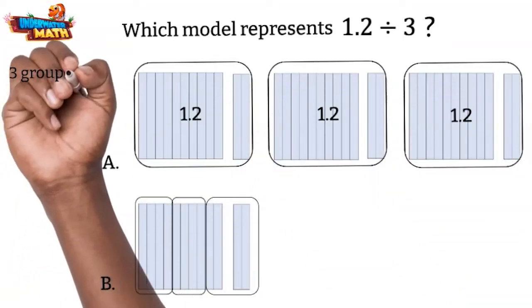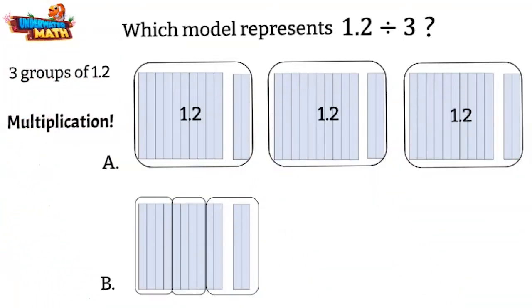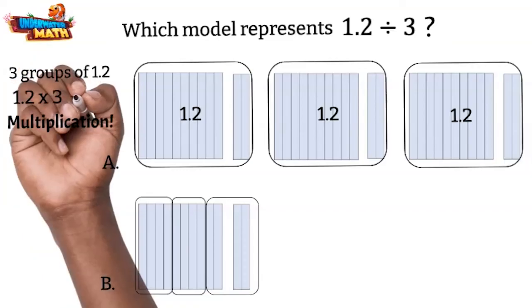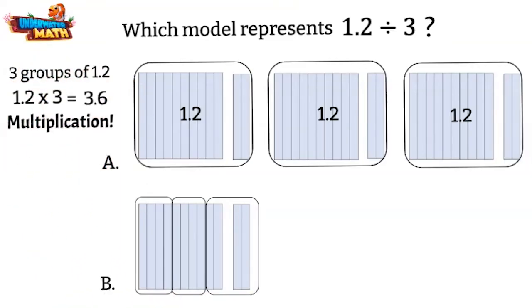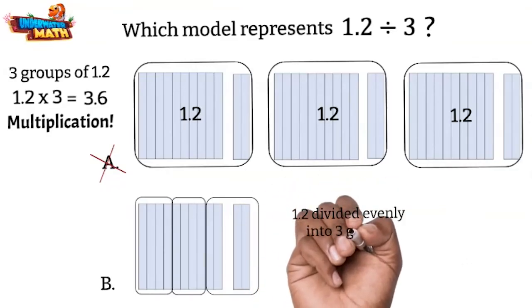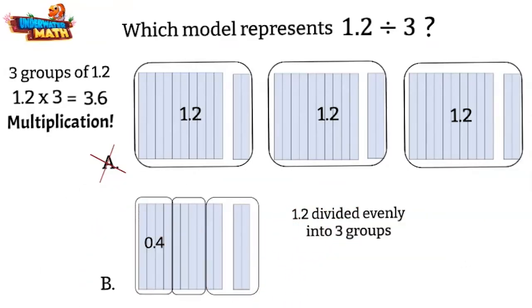This is a multiplication problem. We have a total of 3 and 6 tenths. This is not the correct model. Model B shows one whole and 2 tenths divided into three equal groups with 4 tenths in each group. This model matches our division problem above.